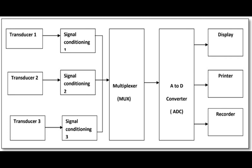After measurement, the transducer data is fed to the signal conditioning device to bring the signal level up to a sufficient value to make it useful for conversion, processing, indicating, and recording. The signal conditioner is used to amplify, modify, or select certain portions of signals.